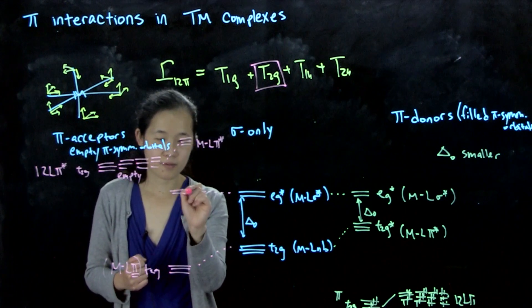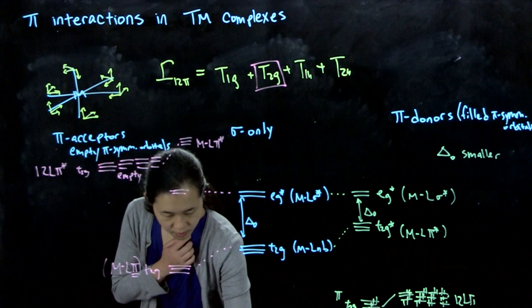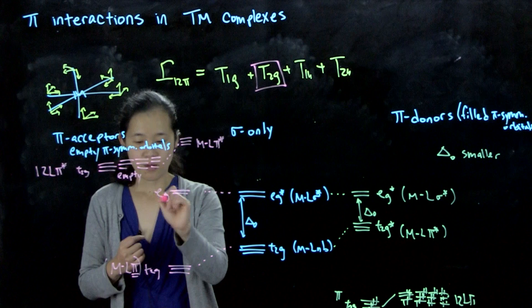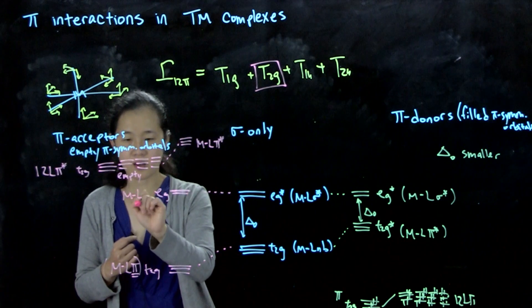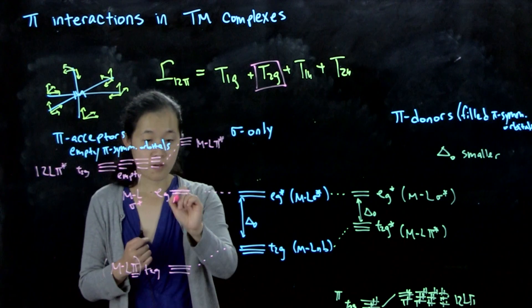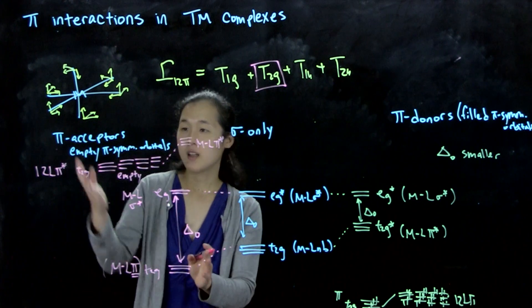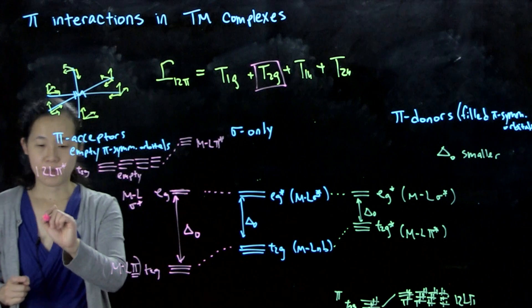This is our EG, this is still ML sigma star. So overall, what happens for a pi-acceptor ligand is that delta O is bigger.